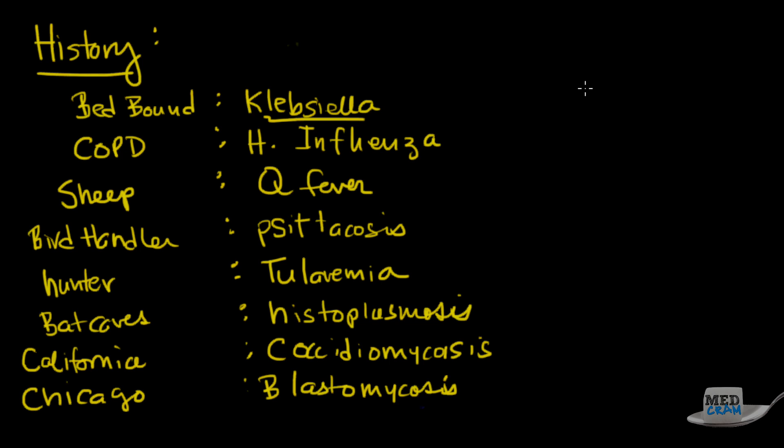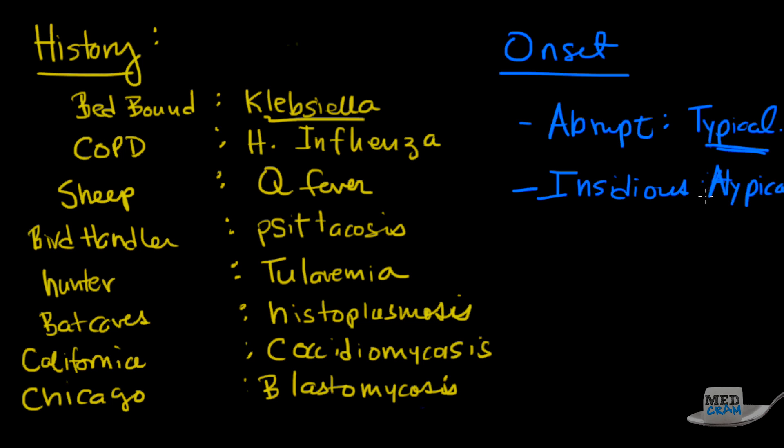Something else that you might see on history is the onset. If it's abrupt, think about Typical Pneumonia. That's typically what happens. If however it is insidious, I want you to think of Atypical. Typical typically is an infection that comes on dramatically, comes on fast, you have fevers, chills, and you're sick very quickly. Atypical on the other hand is not as severe, comes on gradually, and that type of onset is associated with different bacterial organisms: atypical organisms versus typical organisms.